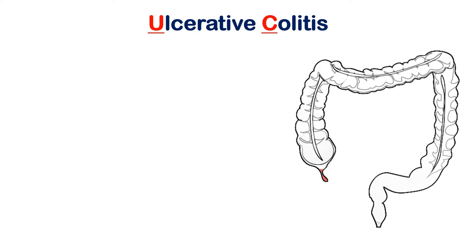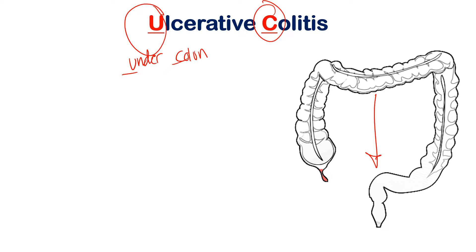The first one we're going to talk about is ulcerative colitis. The first thing to know is that I look at the U in ulcerative and the C in colitis, and that helps me think of 'under the colon' — U for under, C for colon. That tells you that the damage will always start at the rectum, which is located under the colon. Another name for the colon is the large intestine, and basically the damage is a mucosal and submucosal ulceration.